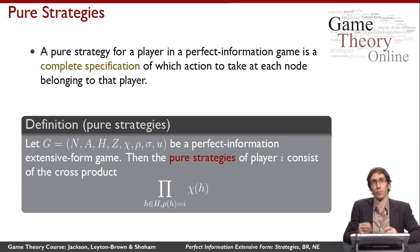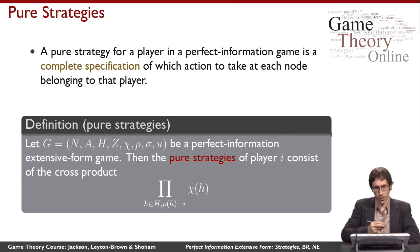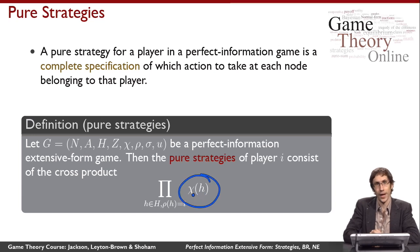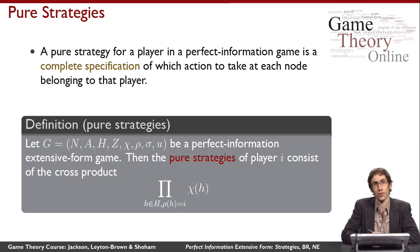When counting pure strategies, we're asking how many different sets of proxy instructions are possible. Formally, the pure strategies of a player in a perfect information extensive form game are the cross product of the action sets for that player — the set of pure strategies is the cross product of those sets across all choice nodes at which that player makes a decision.